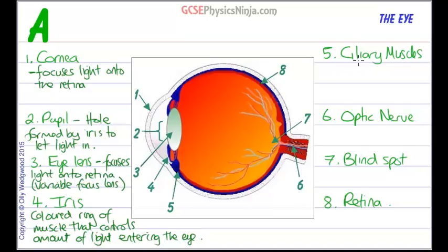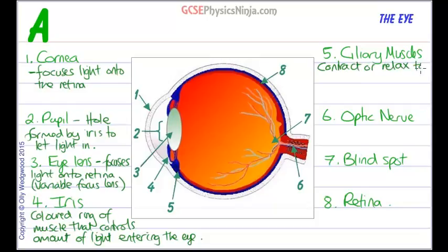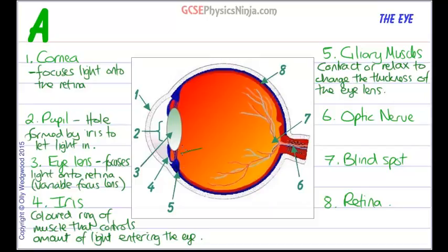Number 5 is the ciliary muscles. These muscles are attached to the eye lens via the suspensory ligaments. When the ciliary muscles contract, it stretches the lens and the lens becomes thinner and less powerful. So the ciliary muscles contract or relax to change the thickness of the eye lens via the suspensory ligaments.